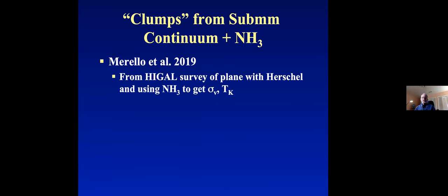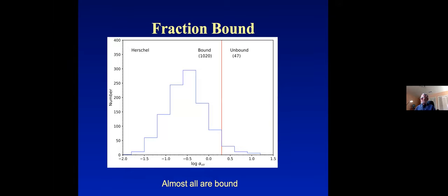At the other extreme, clumps identified from submillimeter continuum emission with ammonia giving the line width — published by a former student, Manuel Morales, from the Hi-GAL Herschel survey — show that the fraction bound is very high. Almost all of these clumps are gravitationally bound; very few are unbound. This is a totally different picture from what you get when you look at the same regions with CO.